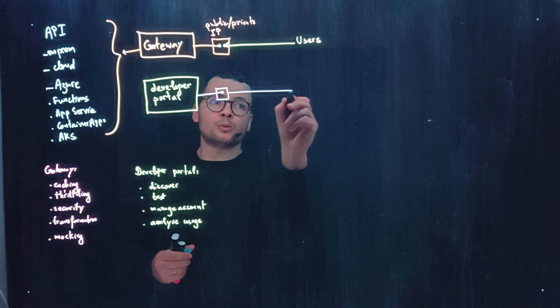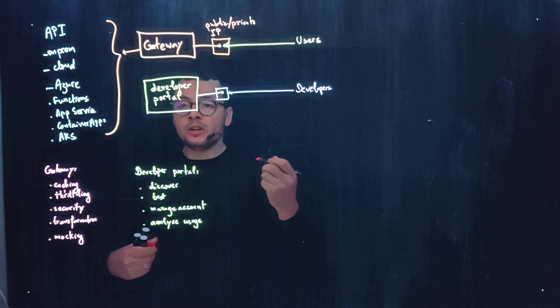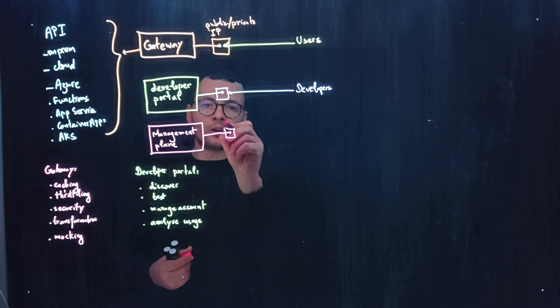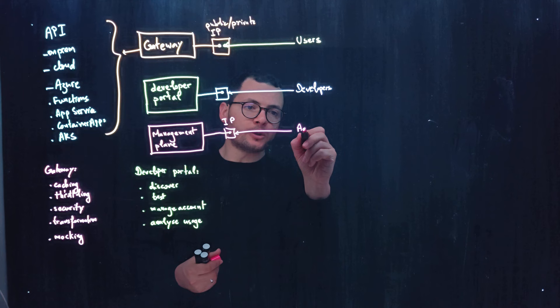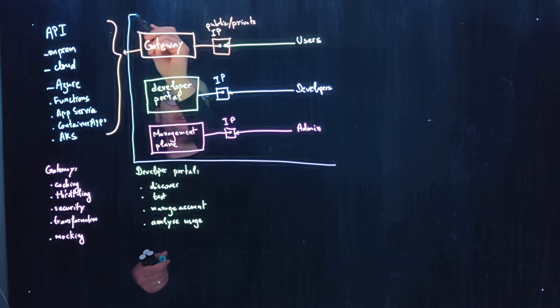For administrators to manage the gateway, the developer portal, and the API roles, they will need the management portal, also called the management plane. The management plane will be exposed through a public or private IP address, and it is meant to be used by the administrator. All of these components — the management plane, the developer portal, and the gateway — are provided by Azure API Management.